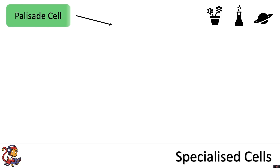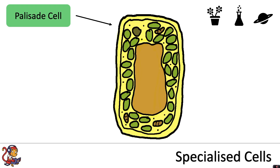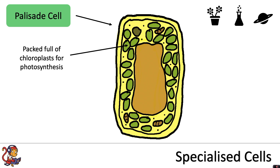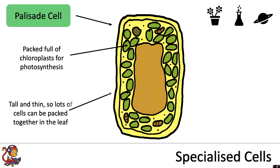Now we'll look at some specialised plant cells. These include the palisade cell. As you can see, this is packed full of chloroplasts for photosynthesis. It is also very tall and thin so lots of cells can be packed together in the leaf.